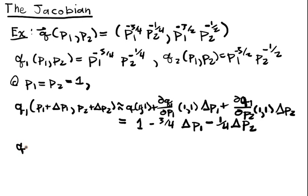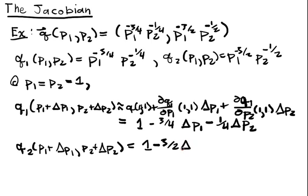Similarly for Q2 of P1 plus delta P1, we can go through all these calculations. For this one we're going to get 1 minus three halves delta P1 minus one half delta P2.